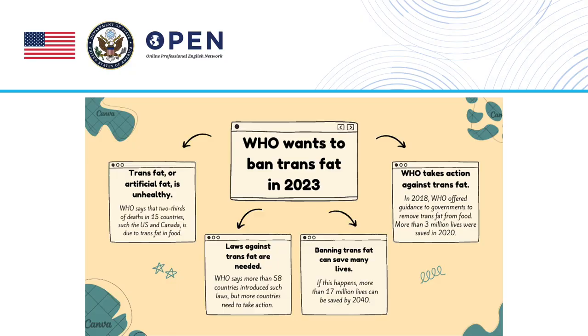Here's a more complete mind map created on Canva. This map summarizes key points of the same VOA reading. After the main message is placed in the middle box, the student can create four branches based on the main points of the article: TransFat is unhealthy, laws against it are needed, banning it can save lives, and WHO takes action against TransFat. Each branch has a header that sums up one key point from the article and a supporting point below it.